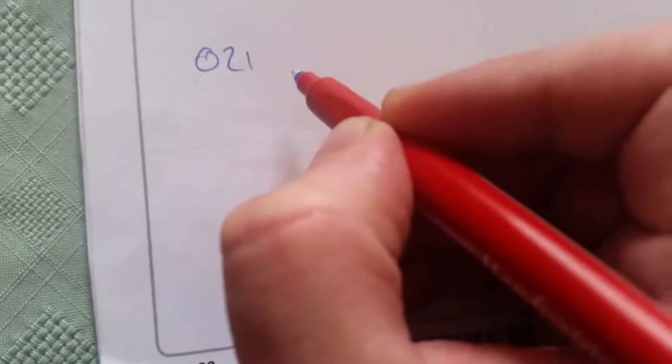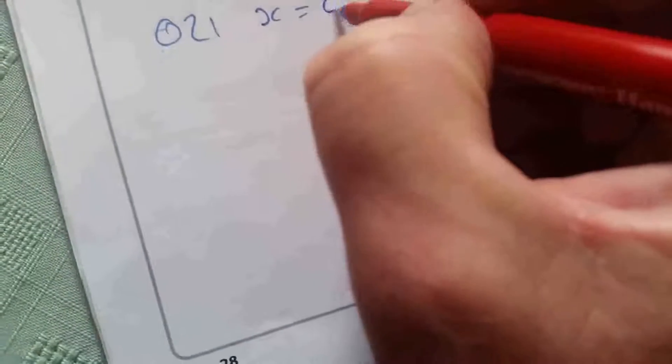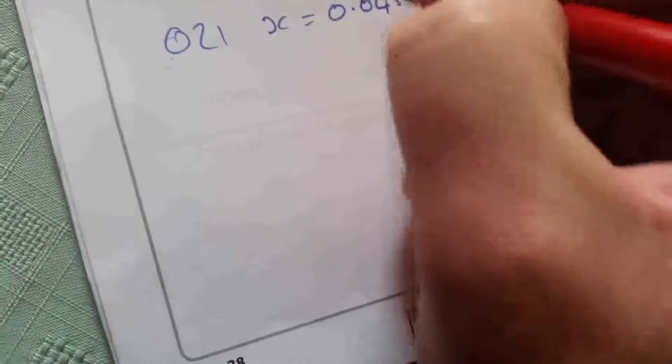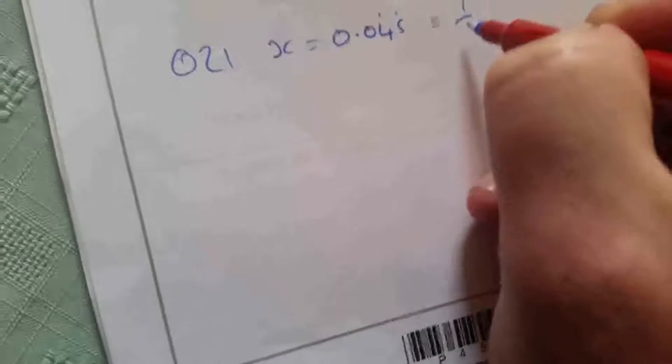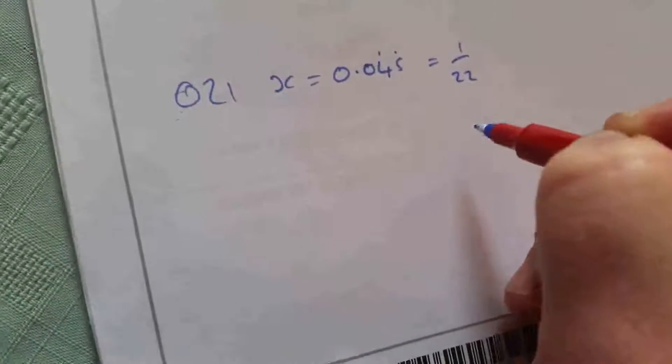Let's look at question 21 from the GCSE paper 2015. It says: prove algebraically that x = 0.045 recurring equals 1 over 22.